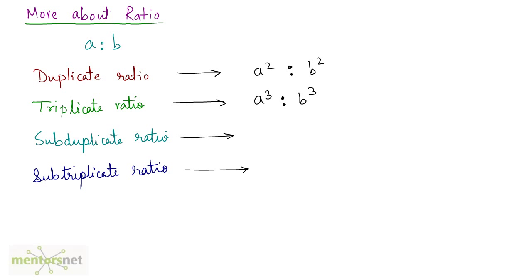The sub-duplicate ratio of two numbers a and b is the ratio of their square roots: √a is to √b. Similarly, the sub-triplicate ratio is the ratio of their cube roots: ∛a is to ∛b.